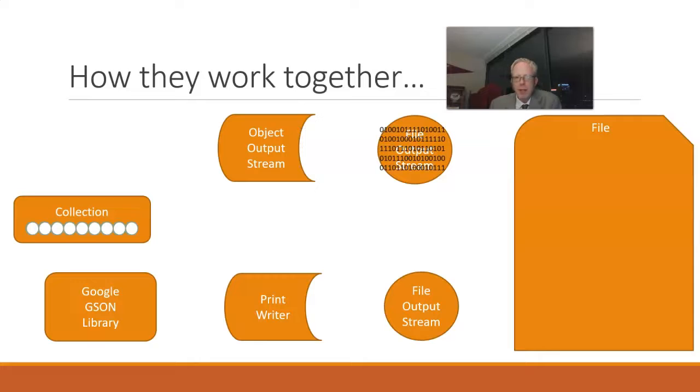Now the file output stream doesn't really know or care what it's dealing with. It just knows that it's receiving some kind of data in binary format, and that it's going to write those to a file destination that's been provided to it, probably by java.io.file or java.nio.files.